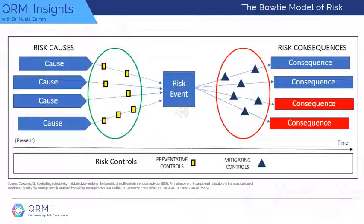This bowtie model provides a novel visualisation of risk events, which is helpful because it depicts possible risk management interventions for controlling risk both through preventing and mitigating that risk. You can see why it's referred to as this so-called bowtie risk model. It presents a given risk event that occurs on a timeline drawn from the risk causes, which are shown on the left-hand side, all the way through to the risk consequences, which are shown on the right-hand side.